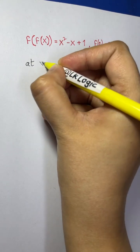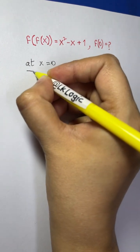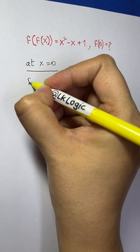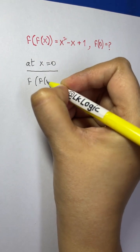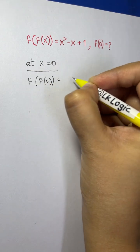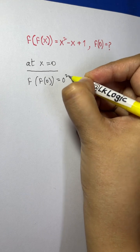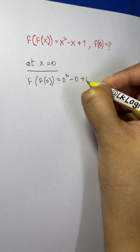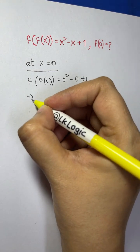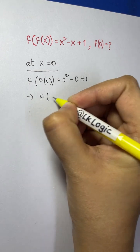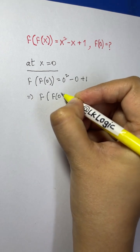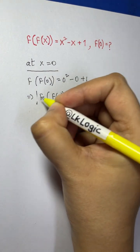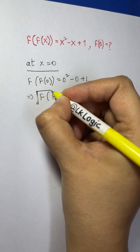At x = 0, let's substitute into the function. f(f(0)) = 0² - 0 + 1, so f(f(0)) = 1. Let this be Equation 1.